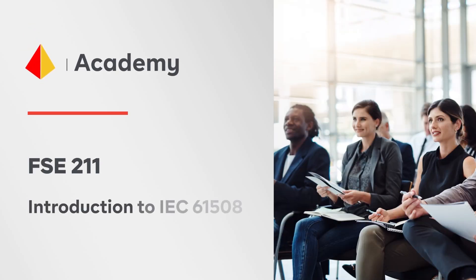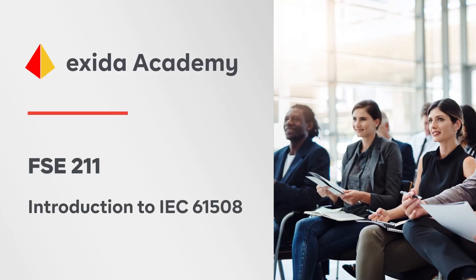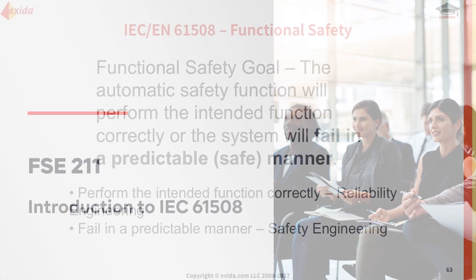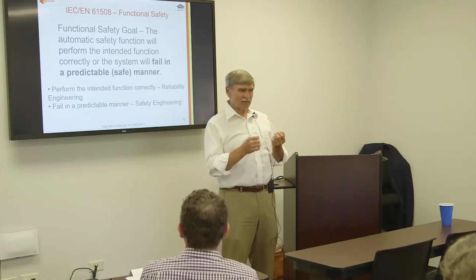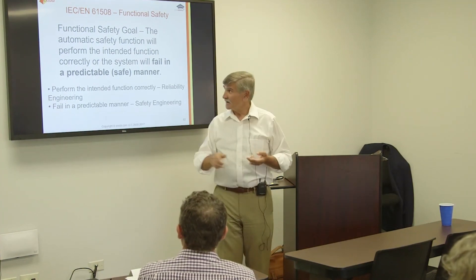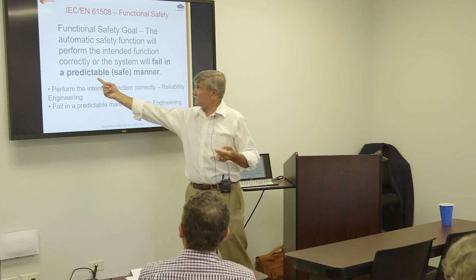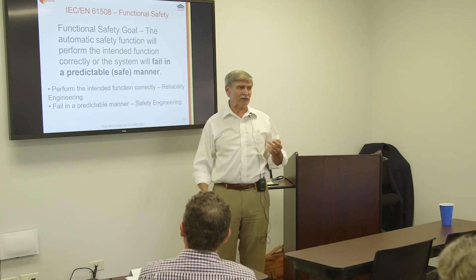One primary objective — well, actually two. We want our system to work. We're going to do everything we can think of to make it work properly. But if it doesn't work, we want it to fail in a predictable and hopefully safe manner.